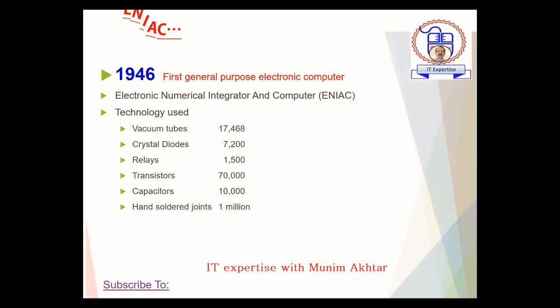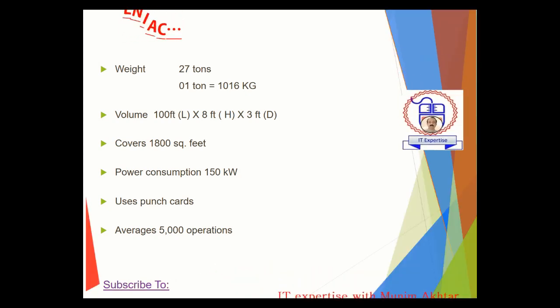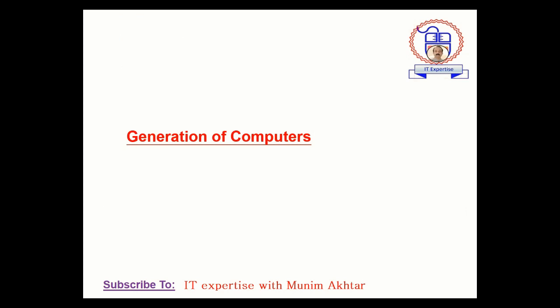Due to all those components, a large space was required. The ENIAC weighed 27 tons — and 1 ton equals 1,016 kg. The space required was 1,800 square feet. The power consumption was 150 kilowatts per hour. Normally, the data input and output speed was 5,000 operations per second with the help of the ENIAC system. You can see how much power it normally consumed.